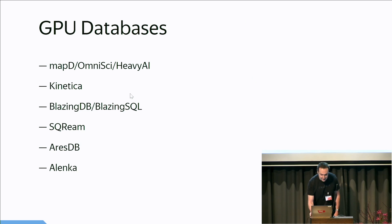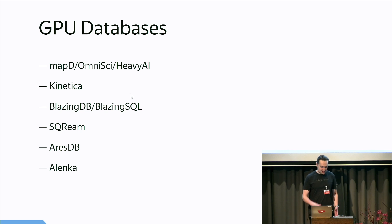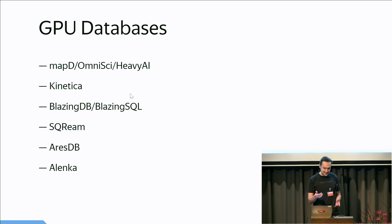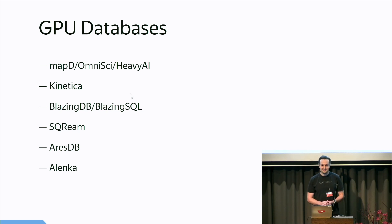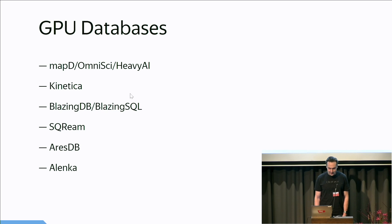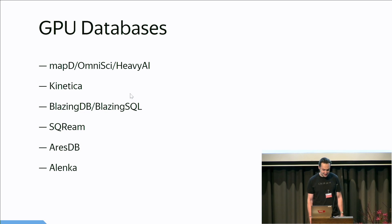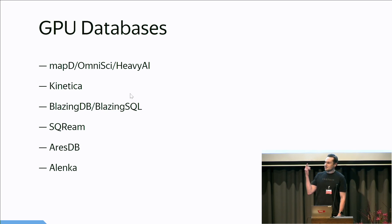Let's take a look more closely at a single example: GPU databases. There are also a lot of them. There is a database named MapD, that was then renamed to OmniSci, and then renamed to Heavy AI. And none of these renames helped them. There is also a database named BlazingDB that was renamed to BlazingSQL — I don't know for what reason. It also did not help. But what is common for all these databases?